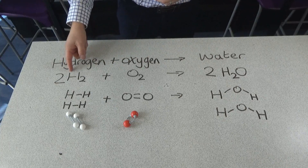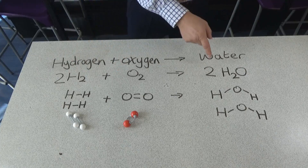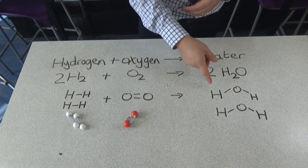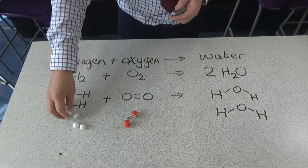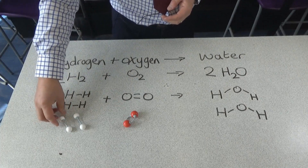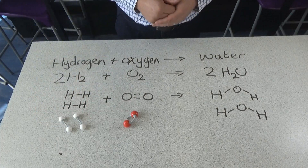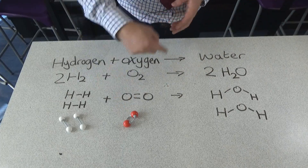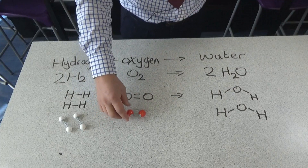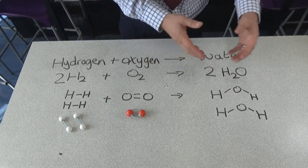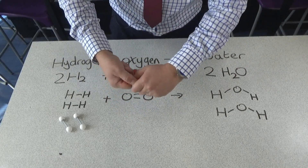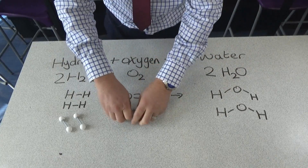We've got two hydrogen molecules reacting with one oxygen molecule to make two molecules of water. We can see here the displayed formula showing the bonds between the atoms. With the moly mods, I've got two hydrogen molecules with chemical bonds joining the hydrogen atoms together, and we've got an oxygen molecule. We can see the double bond in the oxygen molecule. For these to react together and make the two molecules of water, we have to first of all break these bonds so that the atoms can rearrange themselves.